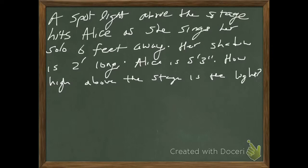I apologize for my terrible handwriting here. The app that I'm using for this does not allow you to type in text just yet, so I have to write these by hand. But I'll read them to you. A spotlight above the stage hits Alice as she sings her solo six feet away. Her shadow is two feet long. Alice is five foot three inches. How high above the stage is the light?